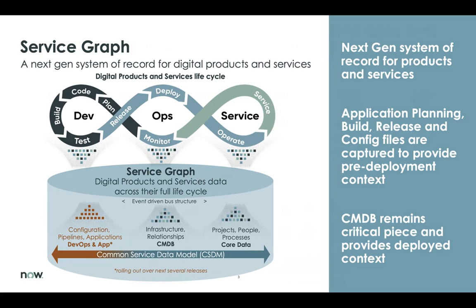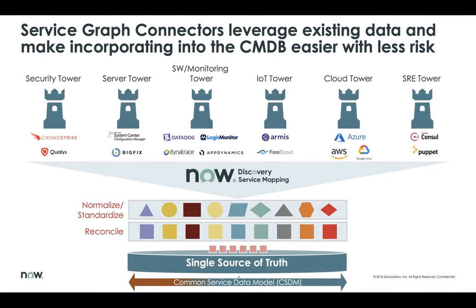The first thing delivered as part of the ServiceGraph strategy is specifically the connectors. The connectors allow us to bring data in from third-party sources — many of which companies may already have in their enterprise, like Qualys, BigFix, or Dynatrace. But in the past, bringing that data in was hard. They often didn't populate the right CI classes or create the right relationships, and if you were bringing in data from multiple sources, it was creating duplicates — conflicting with other data already being brought in, either from discovery or another tool.